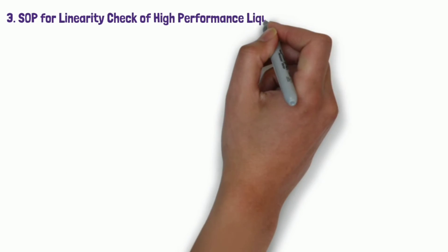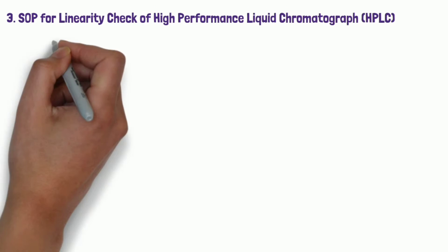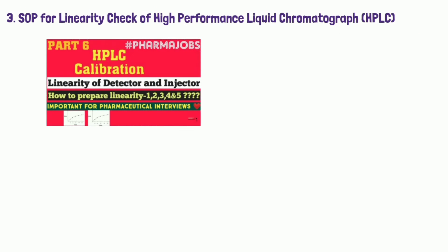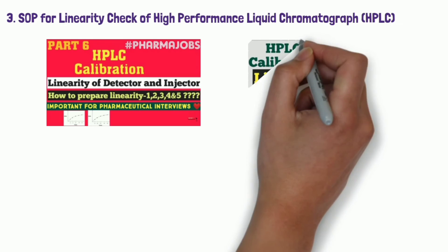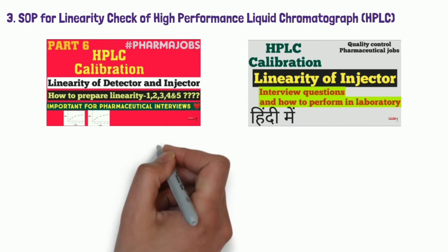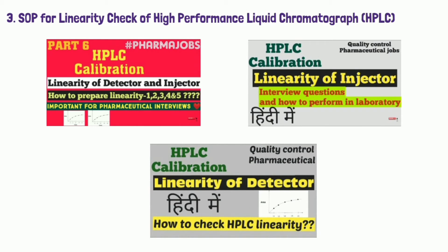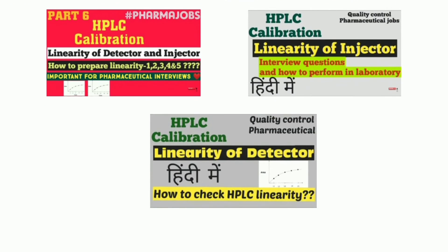Then SOP for linearity check of high performance liquid chromatography means HPLC. You may watch these three lectures. These lectures are relevant with HPLC calibration procedure. In that lecture, linearity is very important so I have covered lectures in Hindi and English also. You can go and watch those lectures because it is important for interview purpose.